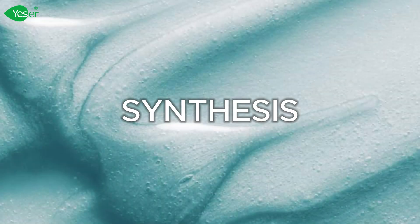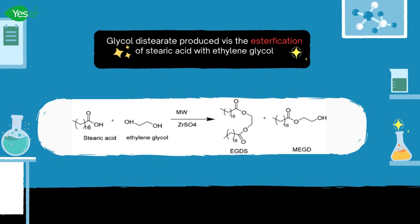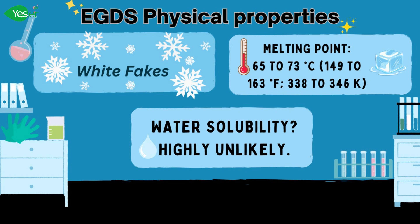Let's talk about the synthesis of EGDS. Glycol distearate may be produced by the esterification of stearic acid or its esters with ethylene glycol. It can also be produced by the reaction of stearic acid with ethylene oxide. Its appearance is in white flakes form, its melting point is from 65 to 73 degrees Celsius, and it is insoluble in water.